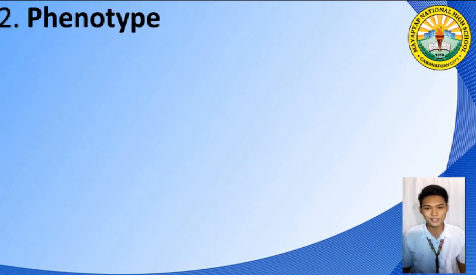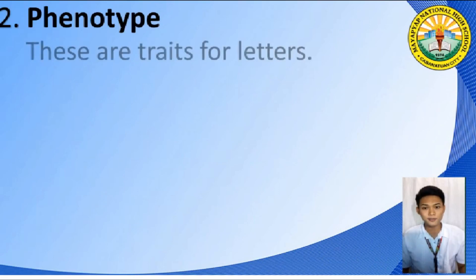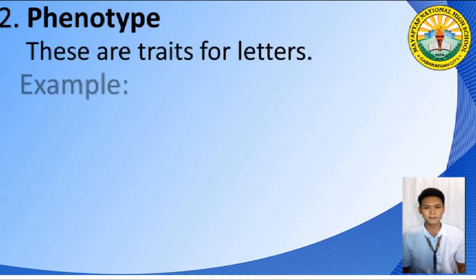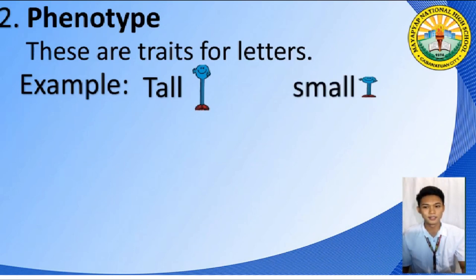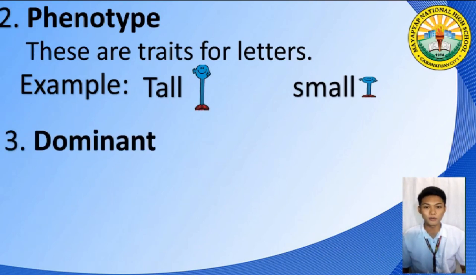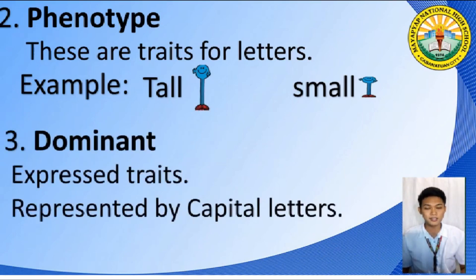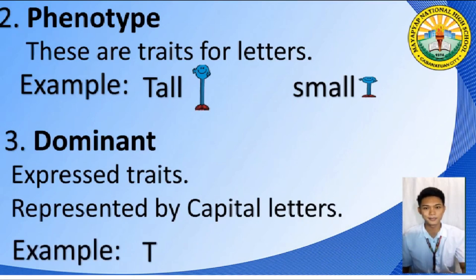The second thing that you have to know is all about phenotype. Phenotypes are traits — for example, tall, or short. The third thing you want to know is all about dominant. As discussed in the warm-up questions, dominant traits are expressed traits and they are represented by capital letters — for example, the capital letter B.